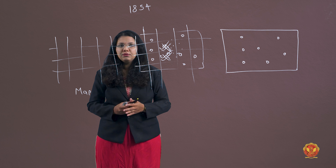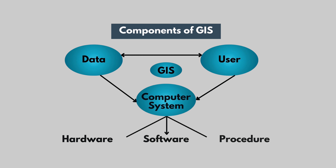When we talk about GIS components, there are also three core components: first is data, second is user, and third is computer system. Data means whatever we get as input. One component is data because nothing can be done without data. The second component is user — if there is no user, who will use that data? The third is the computer system, which manages and displays the data. The computer system itself has three sub-components: first is hardware, second is software, and third is procedure.